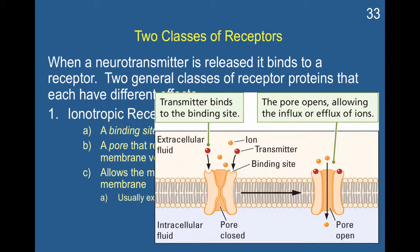Here's an example of an ionotropic receptor. Before the neurotransmitter attaches, it's closed. Once the neurotransmitter attaches, the pore opens to allow the influx or efflux of ions.